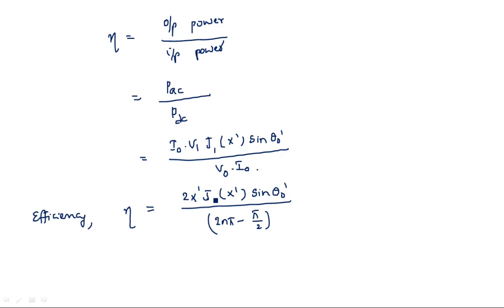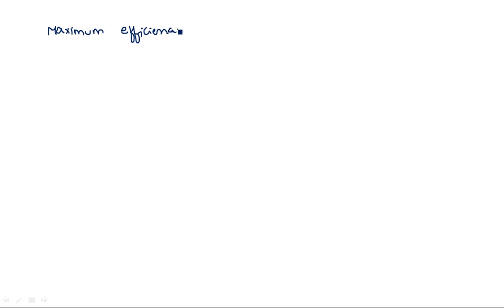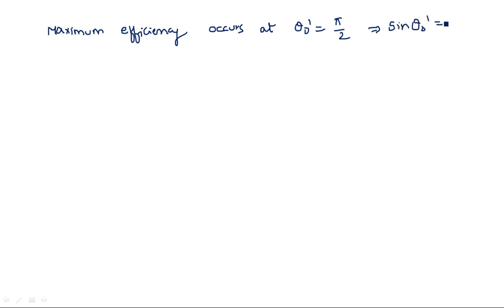We can calculate the maximum value of this efficiency at a particular value of θ0'. Since sin(θ) is maximum when θ = π/2, the maximum efficiency occurs when θ0' = π/2, which makes sin(θ0') = 1.